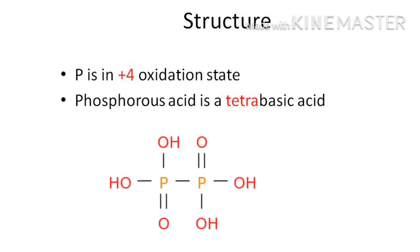The structure of hypophosphoric acid: phosphorus is in the +4 oxidation state. It contains four O–H groups; therefore it is a tetrabasic acid. The structure can be represented as shown here.